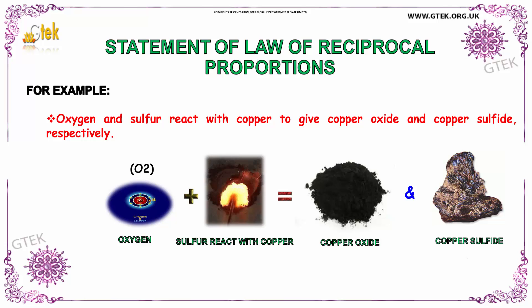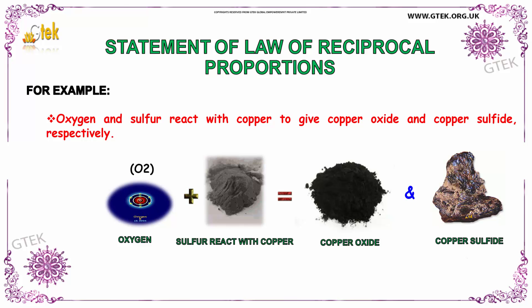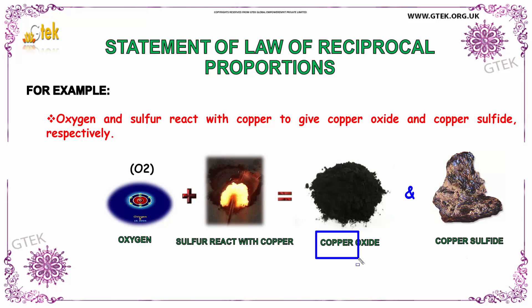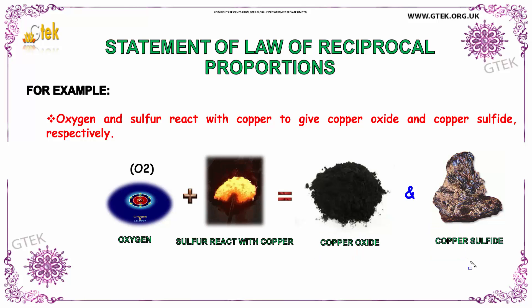For example, Oxygen and Sulphur react with Copper to give Copper Oxide and Copper Sulphide. So you have Copper mixed with Oxygen and Copper mixed with Sulphur.